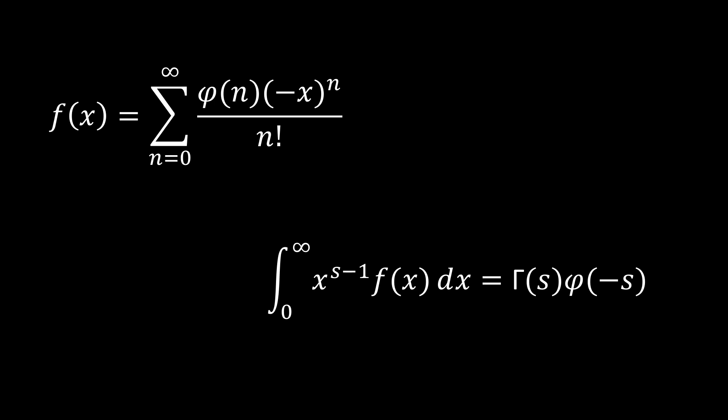Basically, what this theorem says is: if our function f(x) has an expansion that takes the form — the sum from n equals zero to infinity of φ(n) times negative x to the n over n factorial — then the integral from zero to infinity of x to the s minus one times f(x) dx, known as the Mellin transform of f(x), is equal to gamma(s) times φ(negative s).